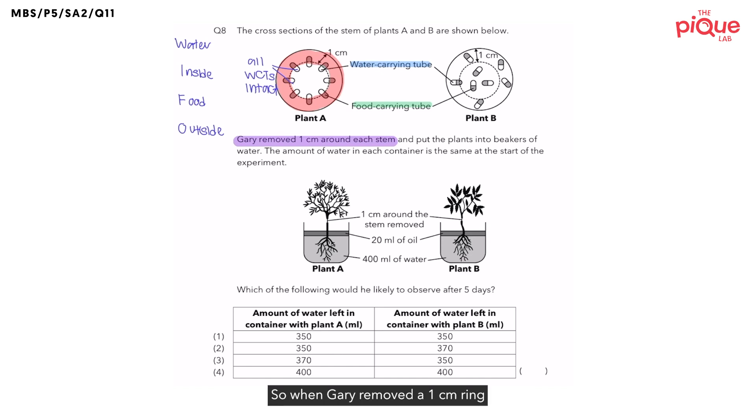Which is why I like to say that plant B does not have any WIFO. So, when Gary removed a 1cm ring around the stem of plant B, which is this area I'm going to highlight in red, this time, is he only removing the food-carrying tubes? No, some of the water-carrying tubes are also being removed, which means that only some water-carrying tubes remain intact. Let's write this down.